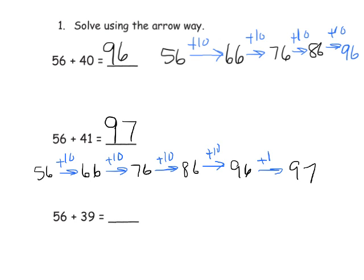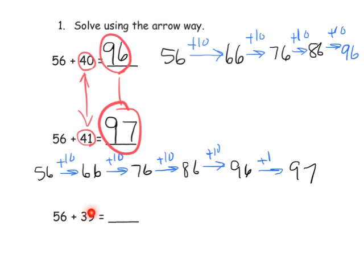And students should see that we added one additional one from 40 to 41, so our answer should be one larger. That makes sense. And ideally, students are going to think, hey, wait, I see a pattern. Automatically, we know if we're going to add 39, that's going to be one less than adding 40. So our answer here is going to be one less than our answer here. So ideally, we know we should end up with 95.